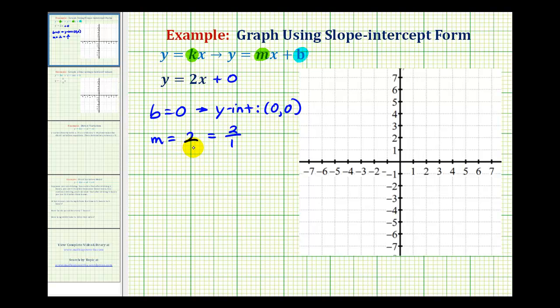And now to graph this direct variation equation, we'll plot the y intercept, which is the point zero, zero, or the origin. And then from here, we'll use the slope to determine additional points on the line.